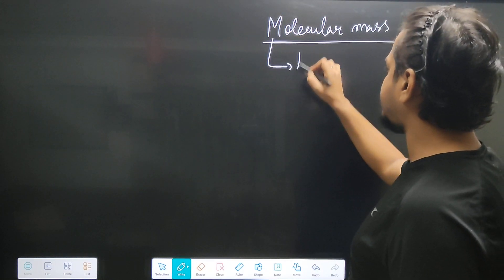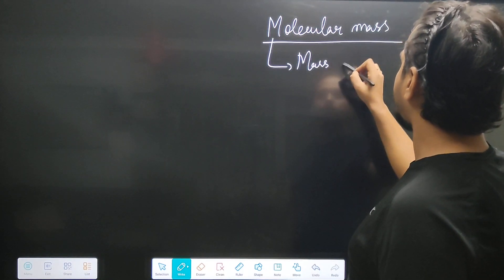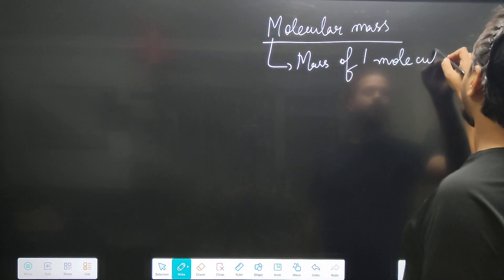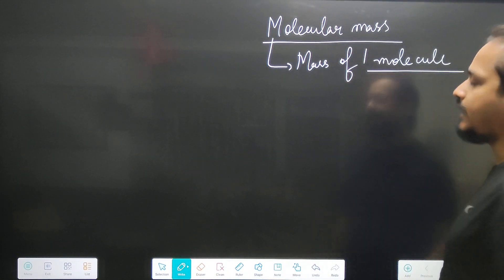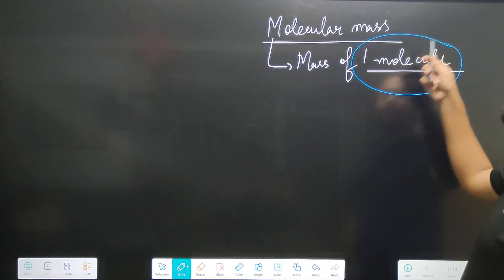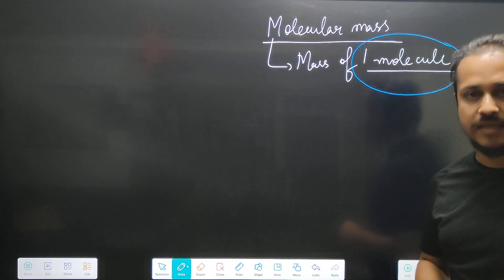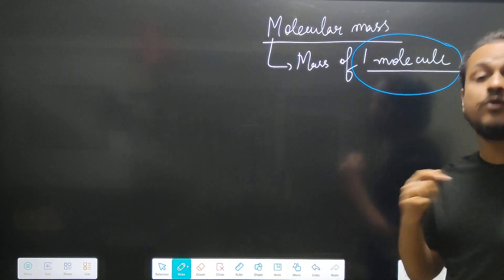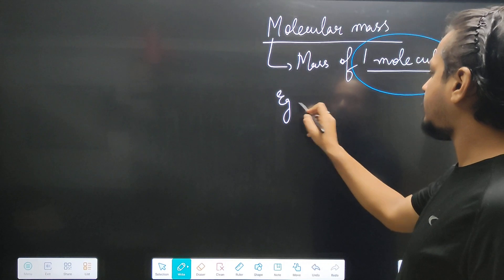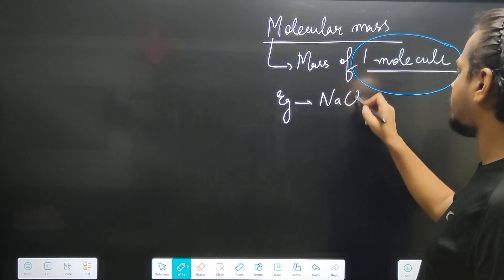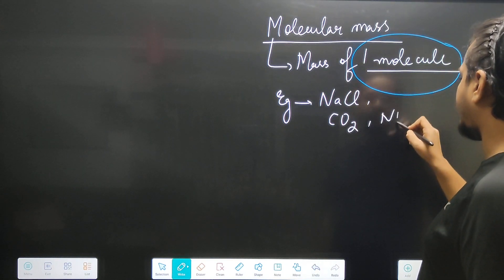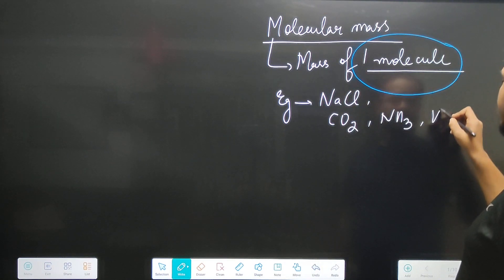Molecular mass is the mass of one molecule of a compound. For example: NaCl, carbon dioxide, ammonia, water — these are all examples of compounds whose molecular mass we can find.